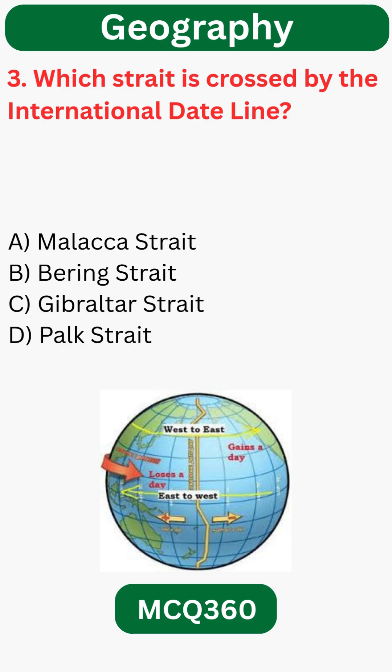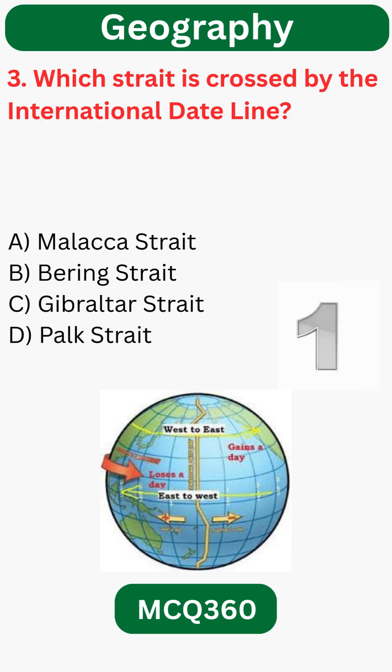Which state is crossed by the international date line? B. Bering Strait.